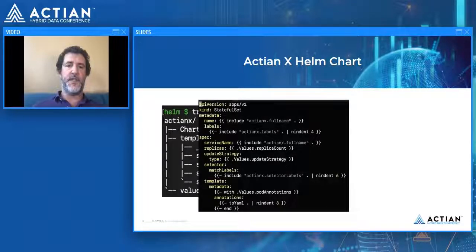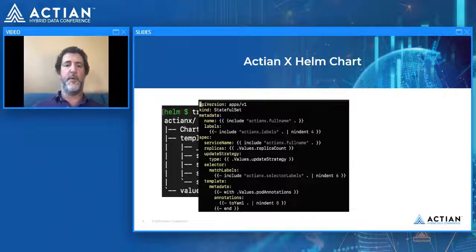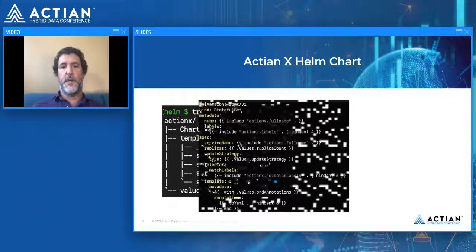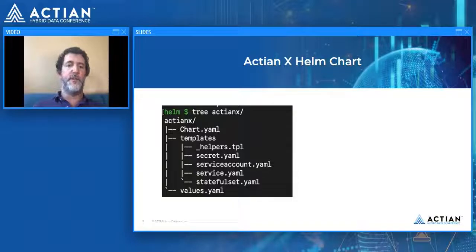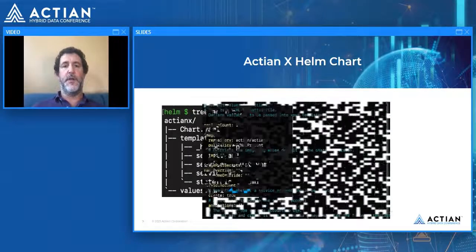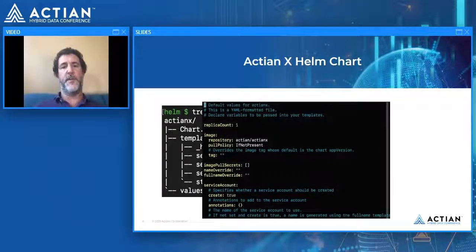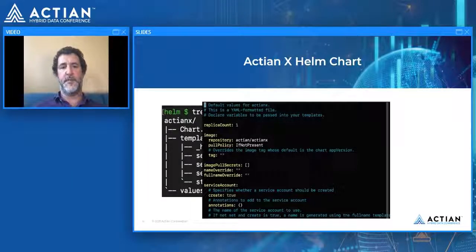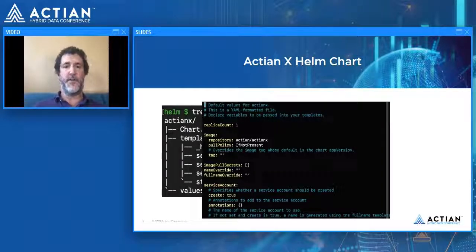Looking at the stateful set, you can see it's essentially a collection of tags with tokenized values. You'll notice some are prefixed with the word 'values', meaning they are exposed to the values file. The values.yaml is used to expose user-configurable variables. Everything defined there is overridable at deployment time and states the default. For example, there's a default replica count of one pod, and we declare which repository and image to pull down.